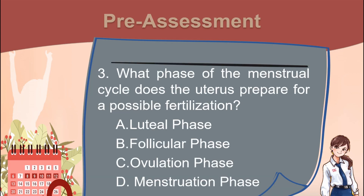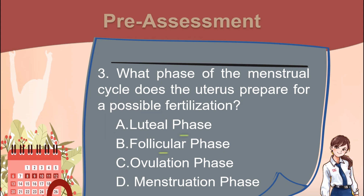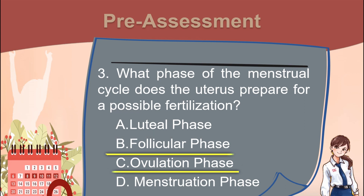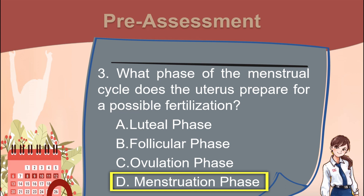Number 3. What phase of the menstrual cycle does the uterus prepare for a possible fertilization? A. Luteal phase. B. Follicular phase. C. Ovulation phase. D. Menstruation phase.